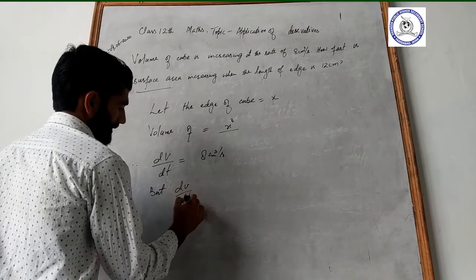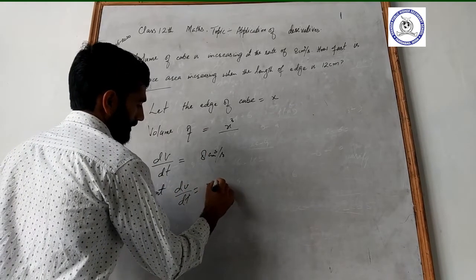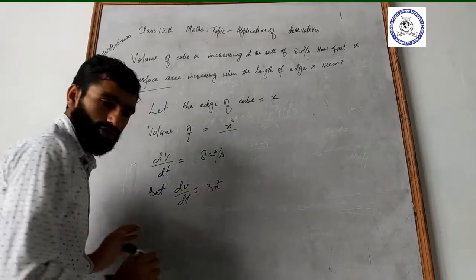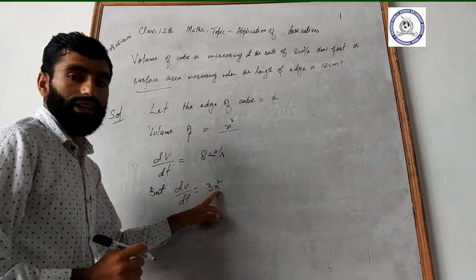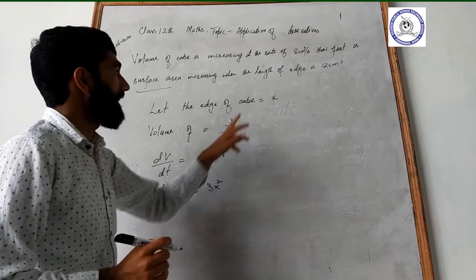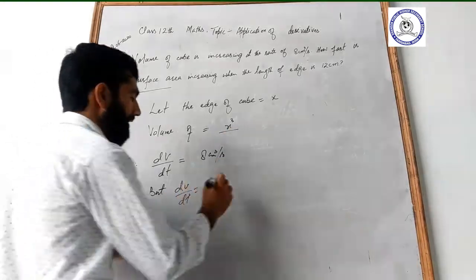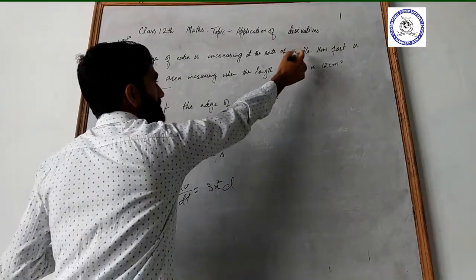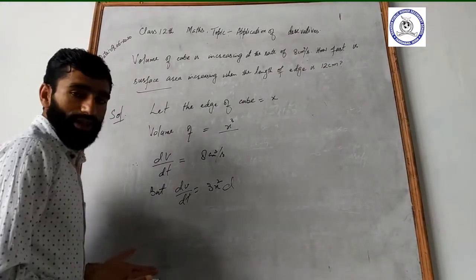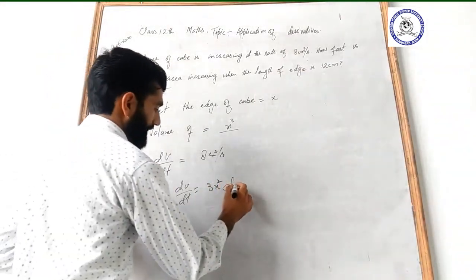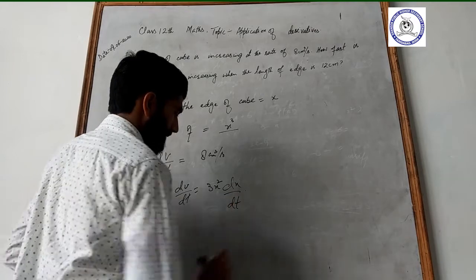Differentiating V = x³ with respect to t, we get dV by dt equals 3x² times dx by dt, because x is changing with respect to t.